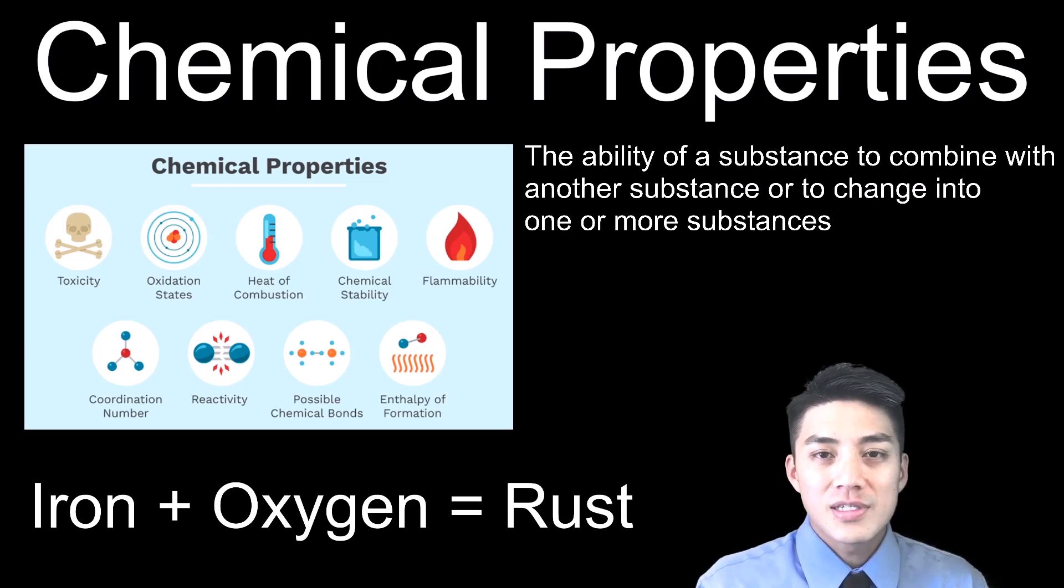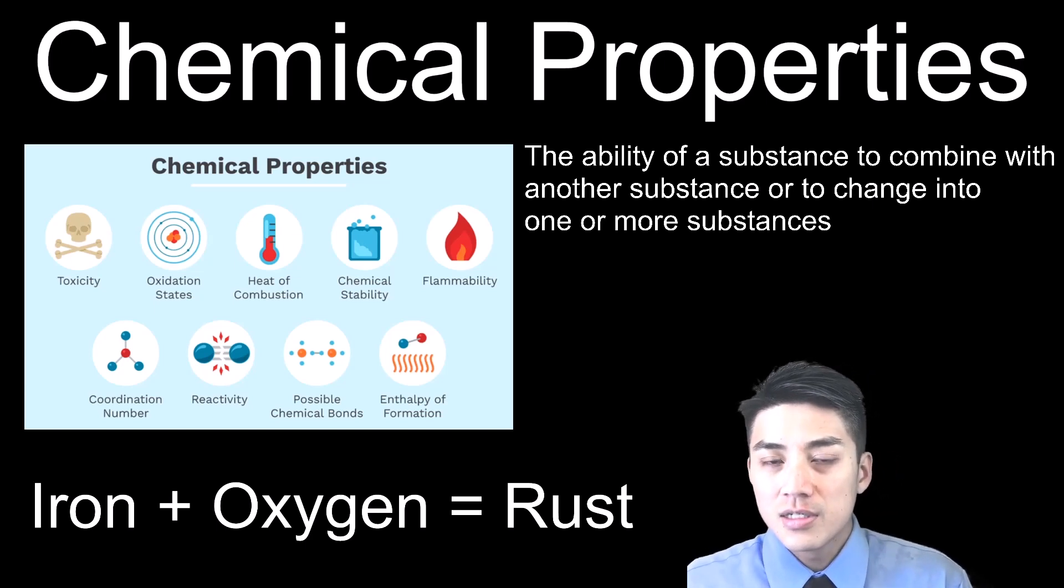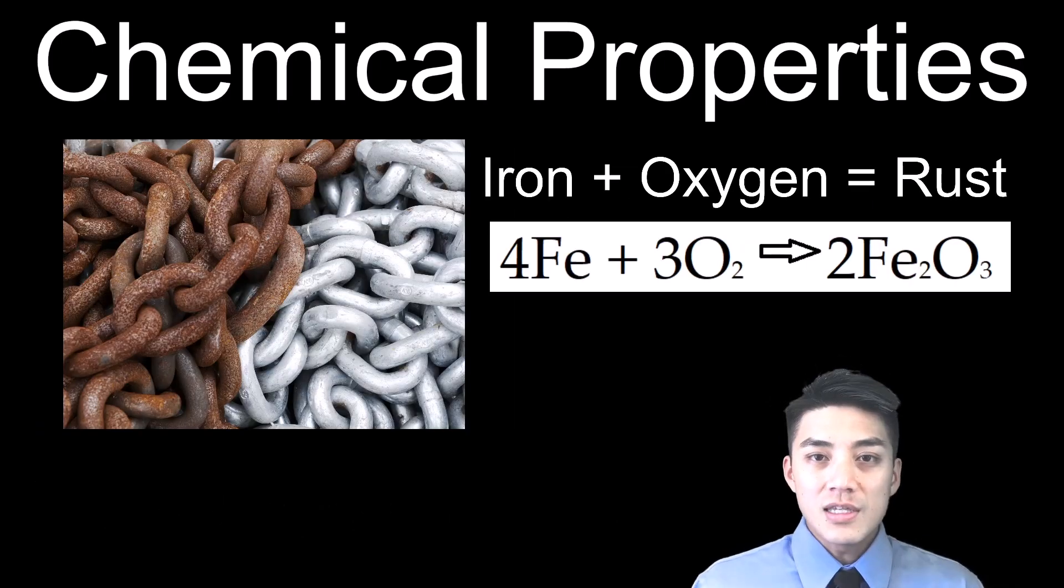Chemical properties is the ability of a substance to change into something else or to combine with a different substance. So a very good example is iron rusting. So iron, when it combines with oxygen, turns into something else. It turns into rust, or iron oxide. You can see in the equation above me, the iron is no longer by itself. It's now combined with oxygen to make a completely different substance we call rust.